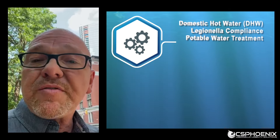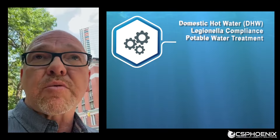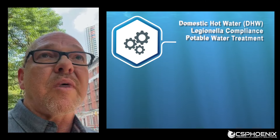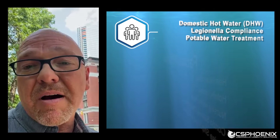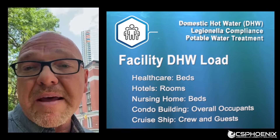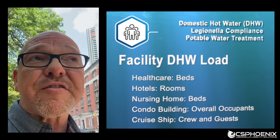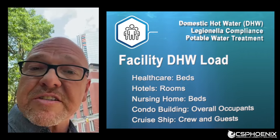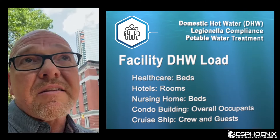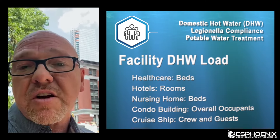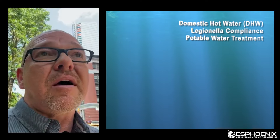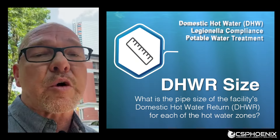Once you've determined whether you have a common mechanical room, we need to figure out how much water is being used by each zone. This is normally done by asking the number of beds for a healthcare facility, the number of rooms for a hotel, or the number of facility occupants for a condo or high-rise. We also like to know the size of the hot water return line.